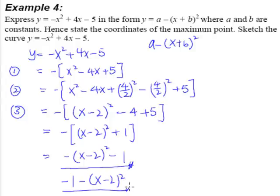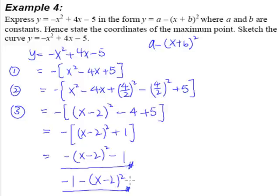We can rearrange so that we can look exactly like the same form that they gave us. This way it will be a lot easier to see the link. So negative 1 is A, and our B is negative 2. So we have completed the square.